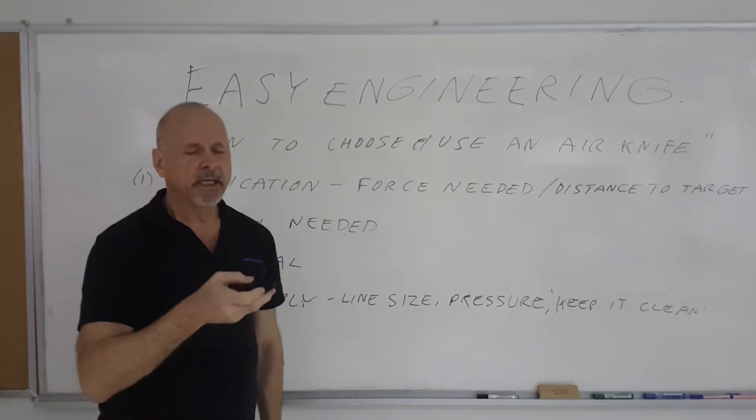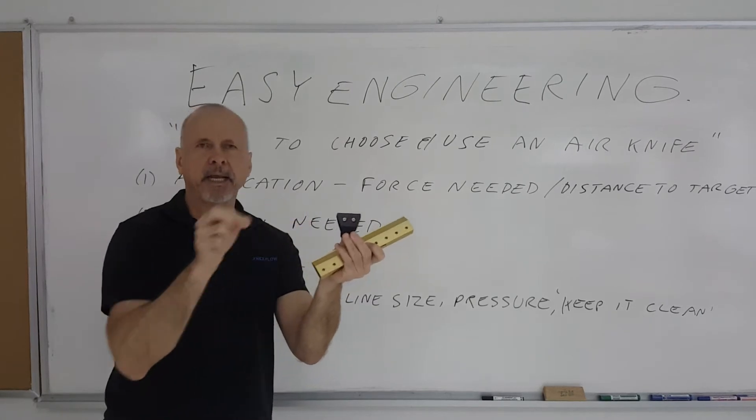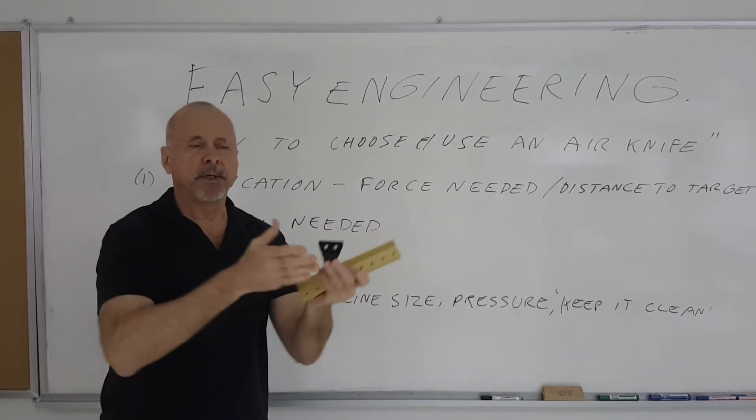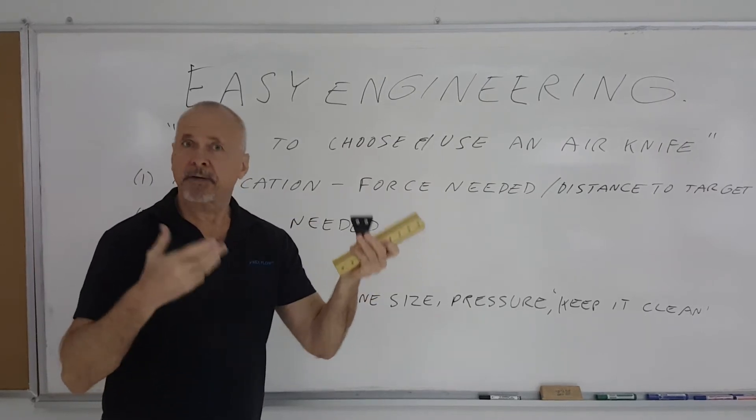The second is where you have a series of flat jets like this NexFlow Air Edger where you put them end to end on a manifold. You're going to get a continuous length of these individual pieces on a manifold. You have an air knife.